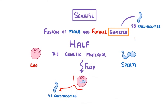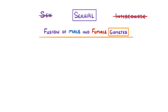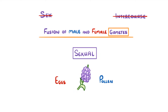We make gametes through a process known as meiosis, which we'll cover in the next video. One thing to point out is that sexual reproduction doesn't actually have to involve sex or intercourse — it just refers to the fusion of male and female gametes. For example, when plants reproduce by the combination of pollen and egg cells, it still counts as sexual reproduction.